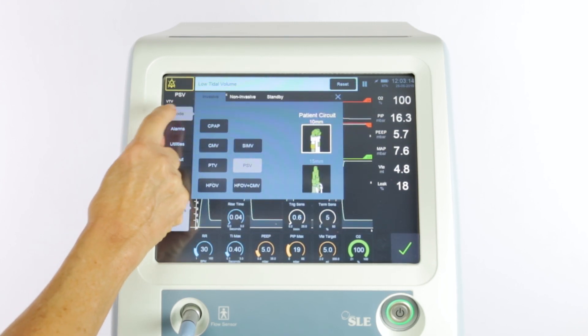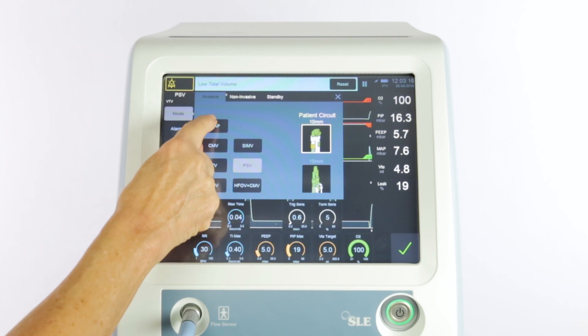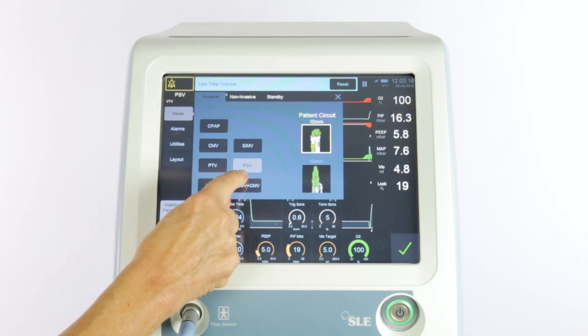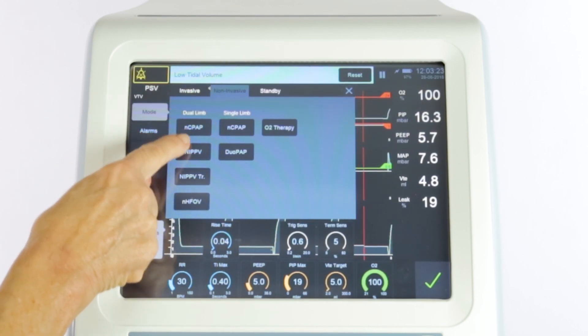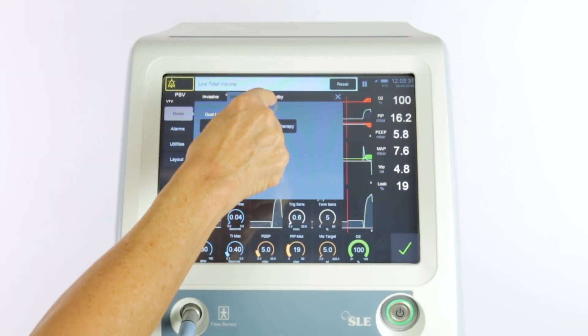Selecting it opens up a menu showing invasive ventilation modes. Using a series of tabs along the top, you can switch between pages showing other modes such as non-invasive and standby.